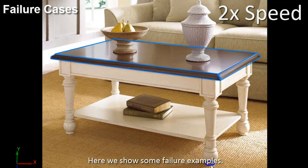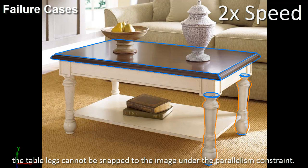Here we show some failure examples. In this example, due to non-ideal perspective projection, the table legs cannot be snapped to the image under the parallelism constraint.